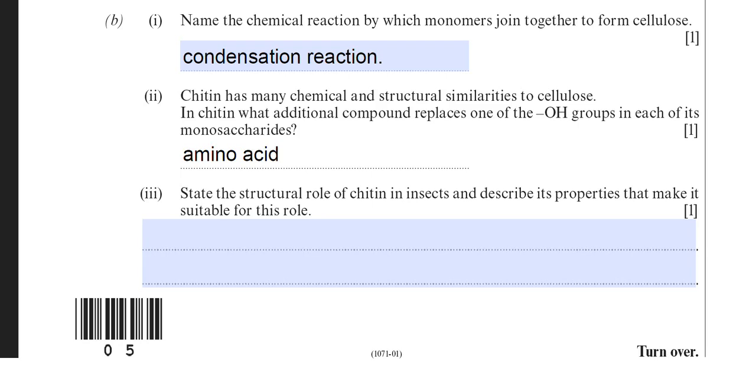Part B3 then. State the structural role of chitin in insects and describe its properties that make it suitable for this role. So we've got to do two things here. We've got to state the structural role of chitin and describe its properties. Well the structural role of course is to produce the exoskeleton, which is the hard outer surface of an insect. So the structural role is to provide or to produce the exoskeleton.